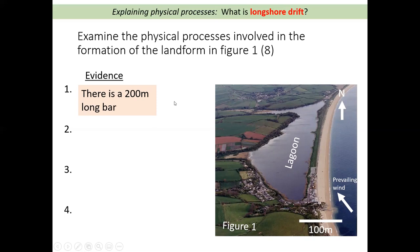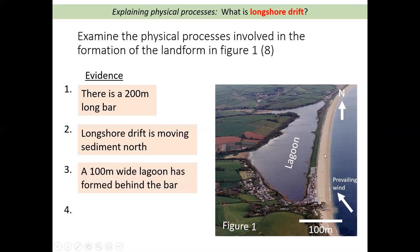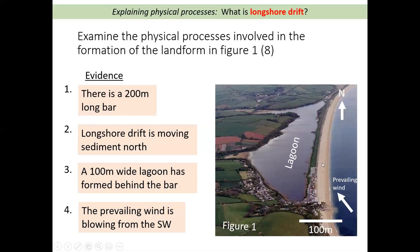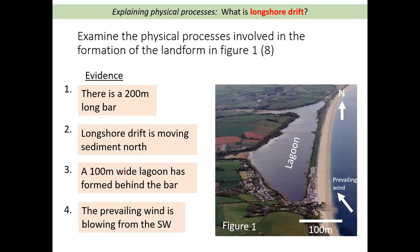The examiner will accept a bit of variation on measurements, so as long as you're roughly right, that's fine. You can also say longshore drift is moving sediment north — the sand is zigzagging along the beach in this direction, heading north. Behind the bar there is a lagoon roughly 100 meters wide, measurable using the scale. The prevailing wind in this picture is coming from the southwest. Remember, four marks are for explaining how a bar forms, and four marks are for specific evidence from the source, so you must include all these pieces of evidence in your answer.